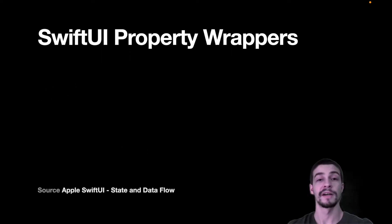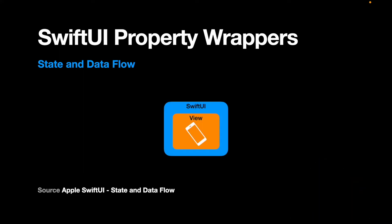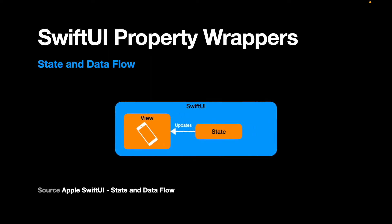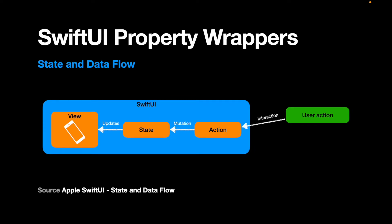First of all, let's have a quick overview of how it works. Apple has an article about stating data flow in SwiftUI apps that I will leave the link in the description. The idea is to understand how SwiftUI handles state and flow inside applications. SwiftUI handles the view, and the view will always respond to the state it has. The state will always be changed by an action — an action can be made by a user when they interact with the application, or by an external event that will publish changes.